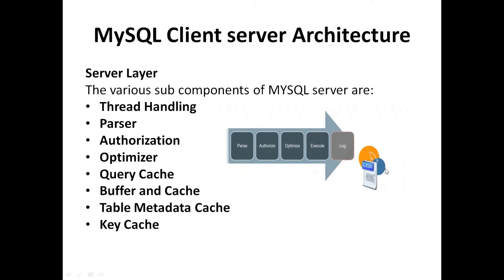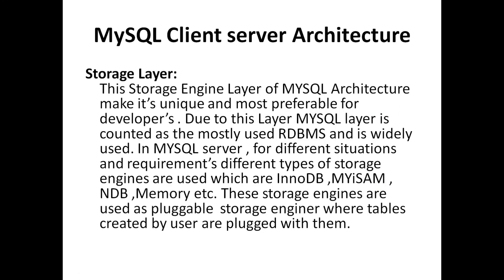SQL processing follows the flow: parsing, authorization, optimizing, then execution. During execution, query caching, buffer cache and query execution occur. The query cache stores the complete result set for a given query. When a client writes a query identical to one in the cache, the server skips parsing, optimization and execution and simply displays the output — similar to the library cache in Oracle. Next comes the storage layer.